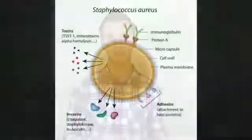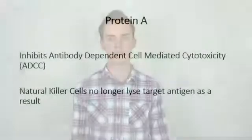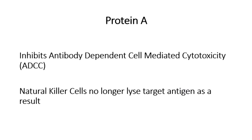Protein A is a protein found in the cell wall of Staphylococcus aureus, and it acts to inhibit antibody-dependent cell-mediated cytotoxicity. Normally in human beings, antibodies — typically IgG — bind to an antigen and form a complex. The Fc portion of that antibody is then activated, and natural killer cells recognize the antigen-antibody complex and lyse the target cell that has been coated with these antibodies.